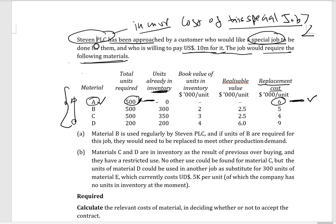For Material B, the requirement is 500 units and 300 units are available in stock. So to complete the special job, you need to buy 200 units from outside, at the replacement cost of $5 per unit. So 200 units times the replacement cost of 5.